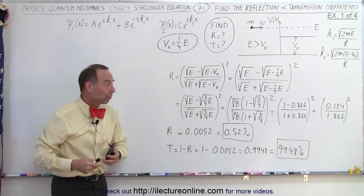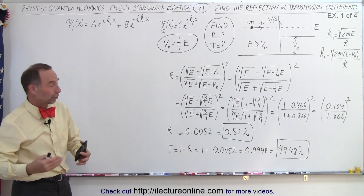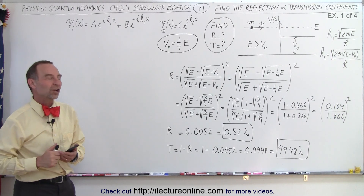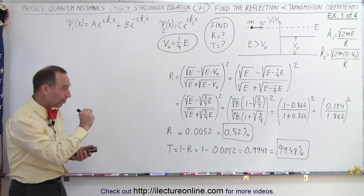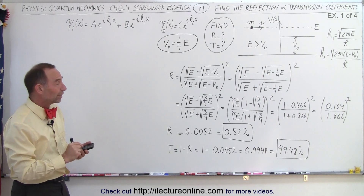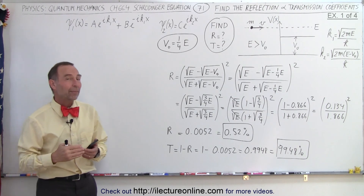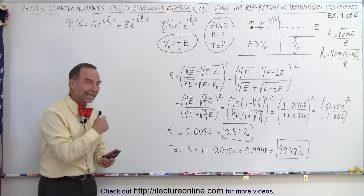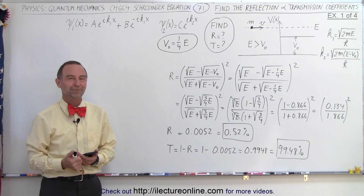Now let's see what happens when we make the potential one half or three quarters or a larger number, and see how that percentage changes. It's kind of interesting that it's such a small percentage even though the potential is one quarter the energy of the particle. Let's see what happens when the potential increases in the following examples.